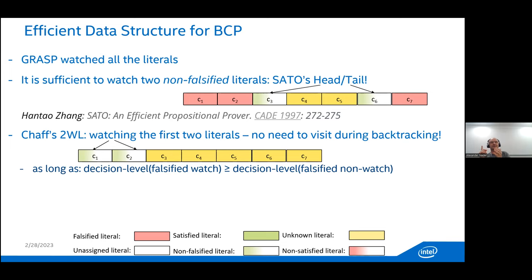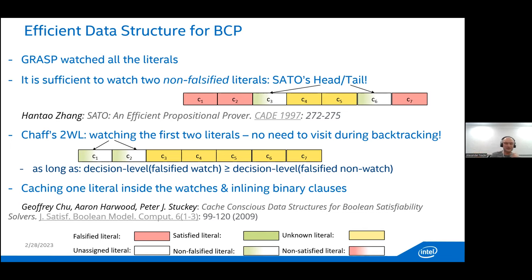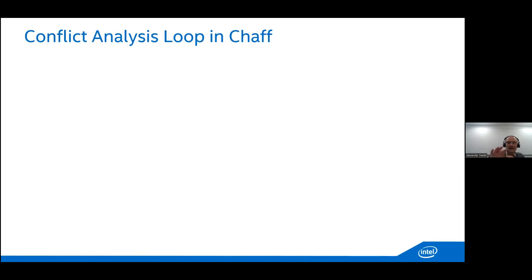The next key observation — used by all modern solvers — is that you don't need to visit clauses during backtracking. Modern solvers watch only the first two literals. For correctness, if one of the watched literals is falsified, its decision level must be no lower than the decision level of the other falsified literals in the rest of the clause. Additionally, modern solvers cache one literal inside the watch list to avoid visiting clauses when that literal is satisfied.